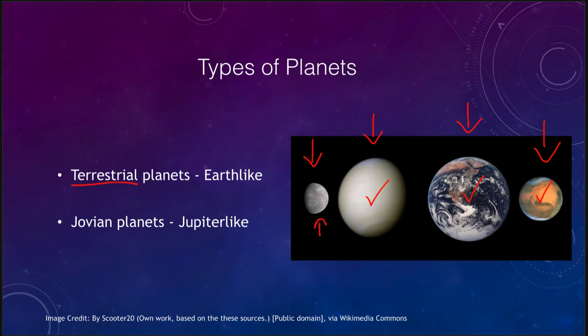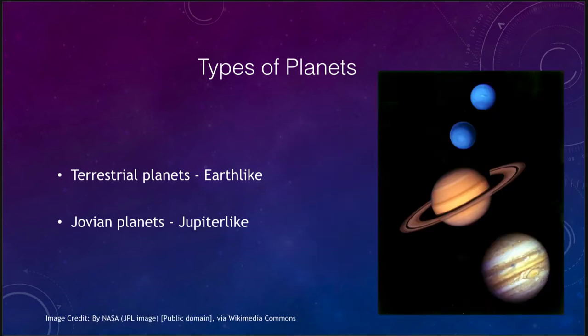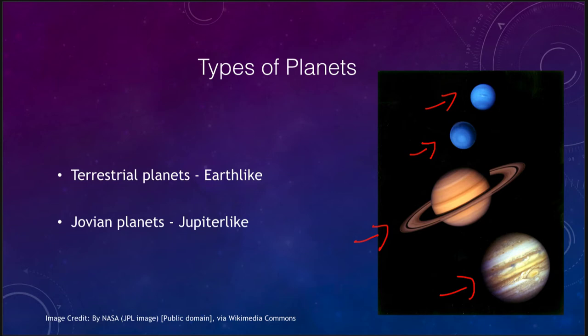The other type of planet is what we call a Jovian planet, or Jupiter-like planet. That includes Jupiter itself as the prototype of these, Saturn, Uranus, and Neptune. These are all very gaseous, and they are ones that we have never landed on and will never land on, because there is no solid surface on which to land.